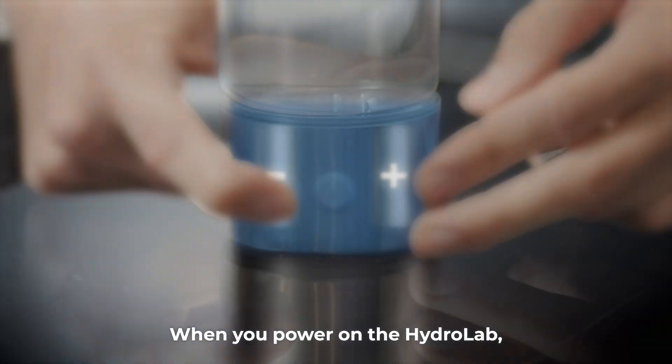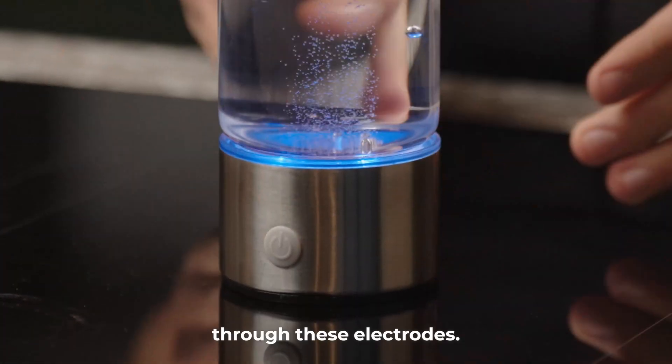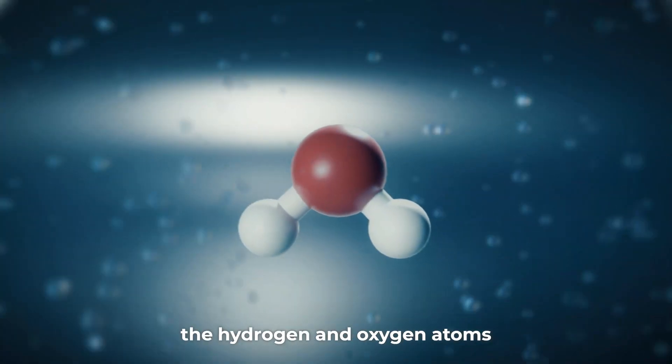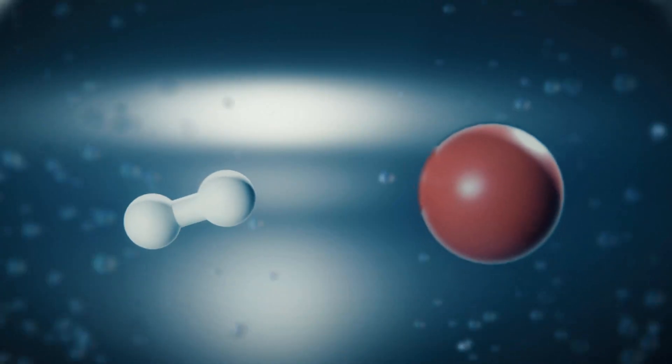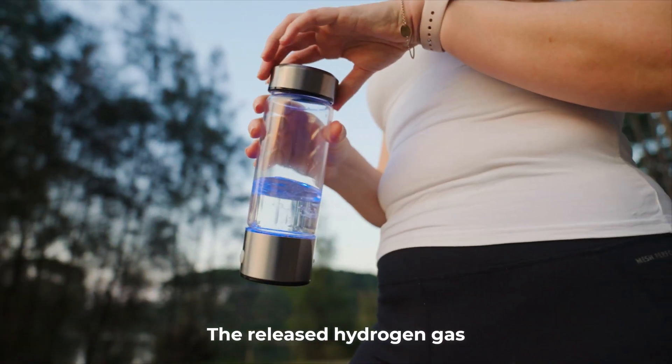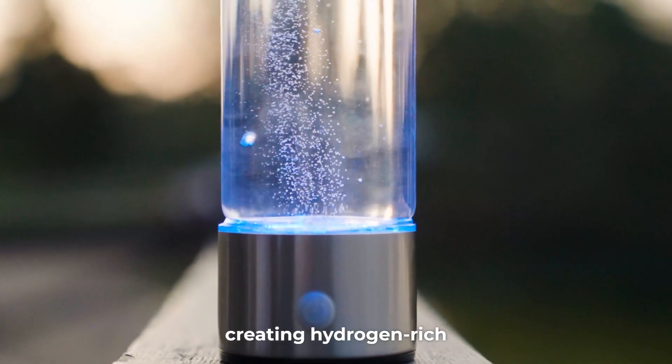When you power on the Hydro Lab, it sends an electrical current through these electrodes. The electrical current breaks the chemical bonds holding the hydrogen and oxygen atoms together. This releases hydrogen gas and oxygen gas. The released hydrogen gas is dissolved back into the water, creating hydrogen-rich water.